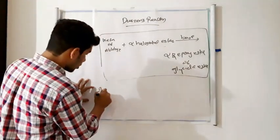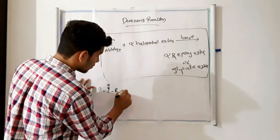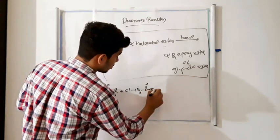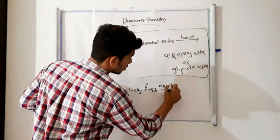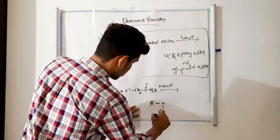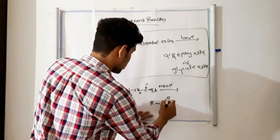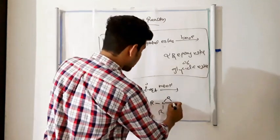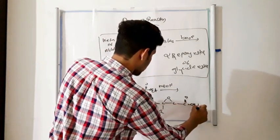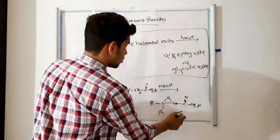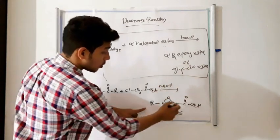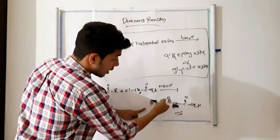For example, a ketone reacts with an alpha-halogenated ester in the presence of a base to form an alpha-beta epoxide ester.